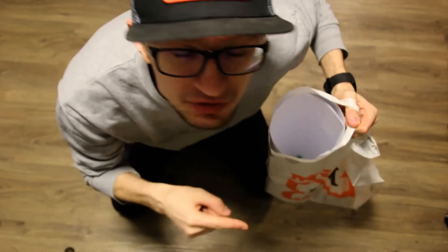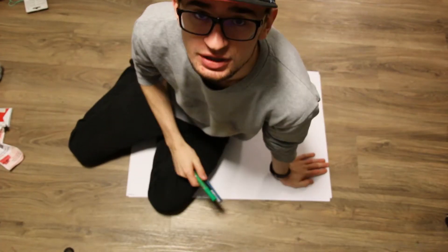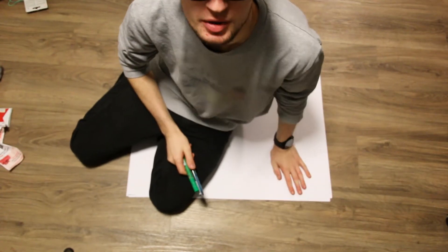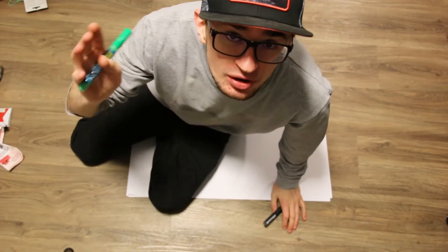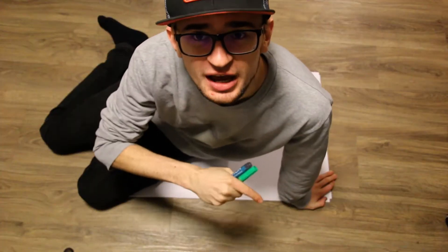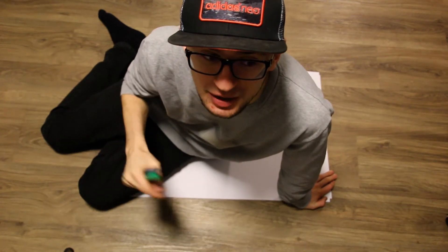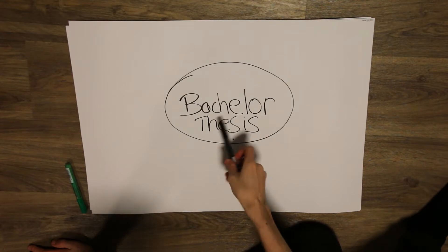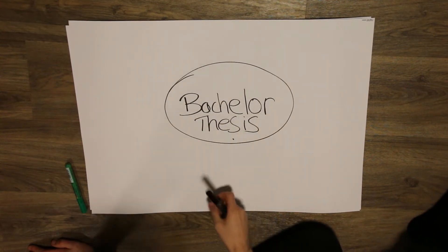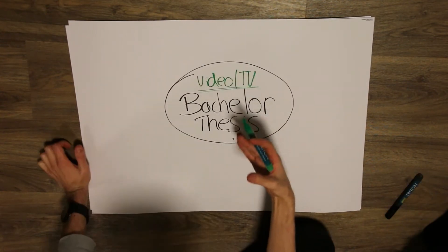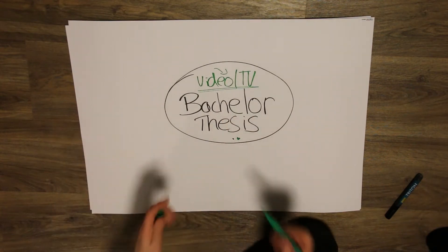Everything I need is in this bag — let's see what's inside. When it comes to visual thinking, the best thing you can do is grab a big piece of paper, grab some markers, and try to get your thoughts on paper. In this case, the topic I want to think about is my bachelor thesis — specifically my research question. In the middle you should always have the big theme you're trying to find a solution for, so here is my bachelor thesis.